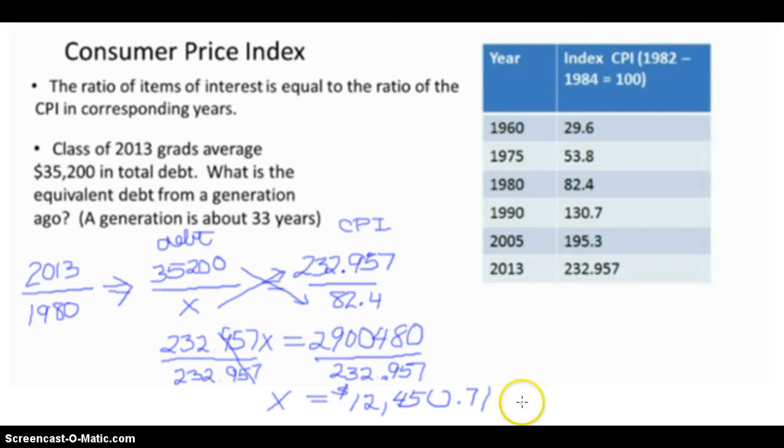So not a difficult problem as long as we know the most important thing, which is that it is a ratio problem, and that we just set up the ratio using information from the consumer price index table.